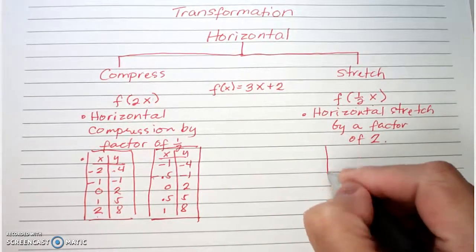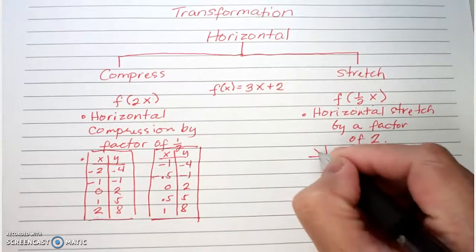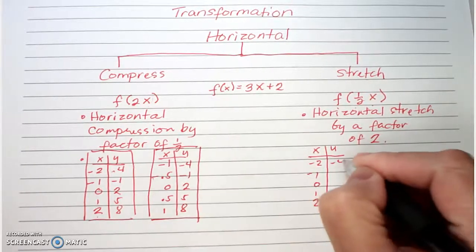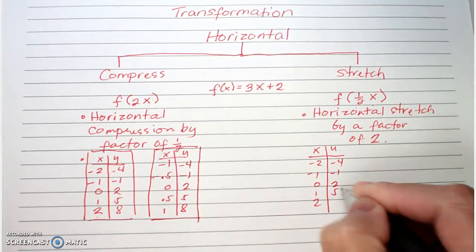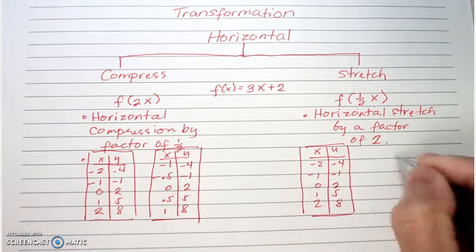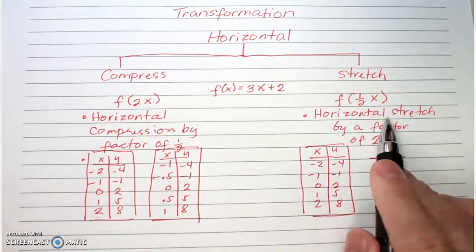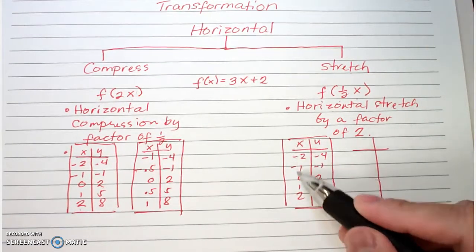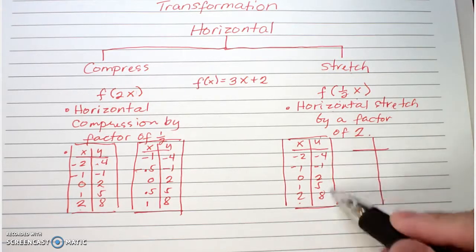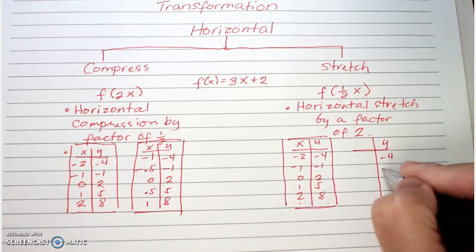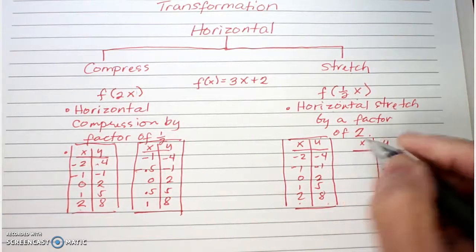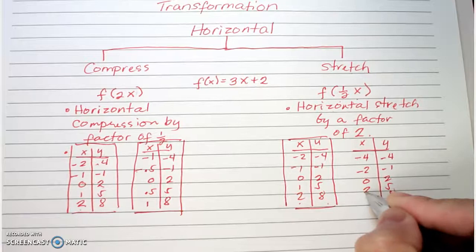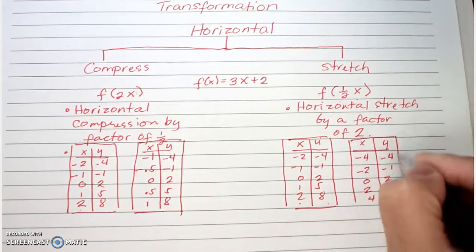This is your table representing your transformed function. Now let's look at the stretch. Your original table remains the same — x-values negative two, negative one, zero, one, two, and y-values negative four, negative one, two, five, and eight. For the new table, since it's a horizontal stretch by a factor of two, all the x-values are going to be multiplied by two while the y-values stay the same. So the x-values become negative four, negative two, zero, two, and four.